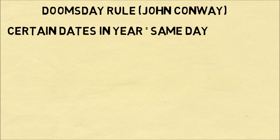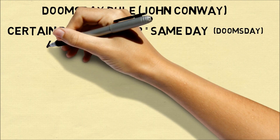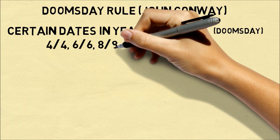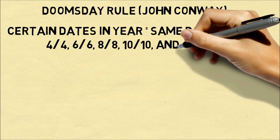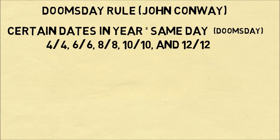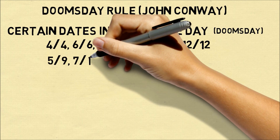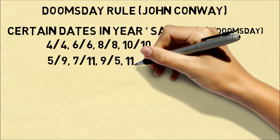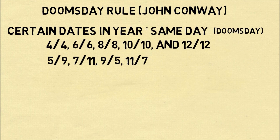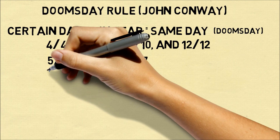There are certain days in the year that will fall on the same day, and John Conway calls this the doomsday. He noticed a pattern that in every year, the dates 4-4, 6-6, 8-8, 10-10, and 12-12 will always fall on the same day of the week — these were chosen because they're easy to remember. It will also be the case that 5-9, 7-11, 9-5, and 11-7 will also fall on the same day.